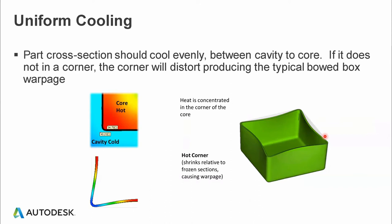Uniform cooling is needed so that part cross-sections cool uniformly, resulting in uniform shrinkage in the part. No part design is truly uniform in thickness. Take the example of a square box — we try to place cooling channels on the cavity side to extract heat effectively, and on the core side to extract heat from the center. But at the corners we may not be efficient in extracting heat, and that's where heat concentration happens. The hotter section tries to pull inward, and thermal bending causes buckling of the part at the corner due to thermal contraction.